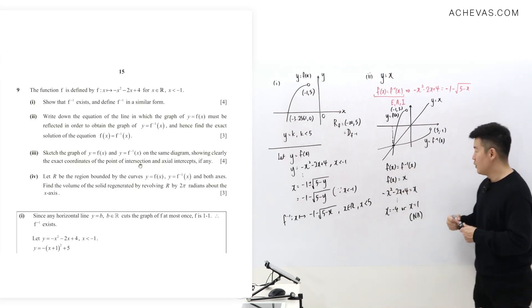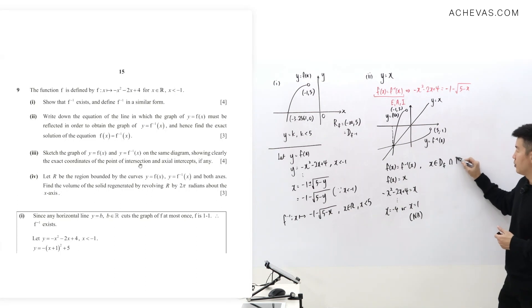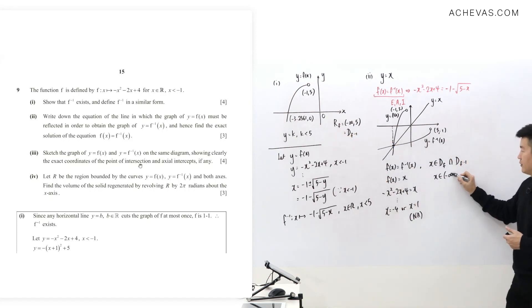Which means that whatever x is going to be the final answer, it must satisfy both the domain of f and the domain of f inverse at the same time. Which means that x must satisfy the domain of f, the domain of f is from minus infinity all the way until minus 1.